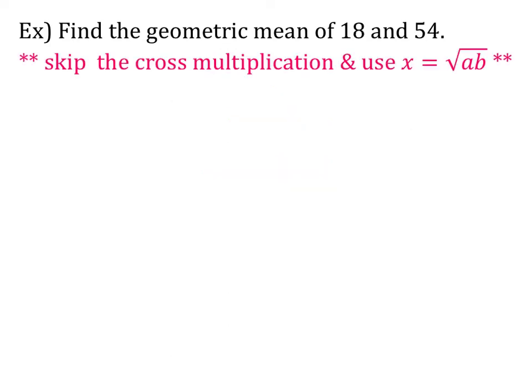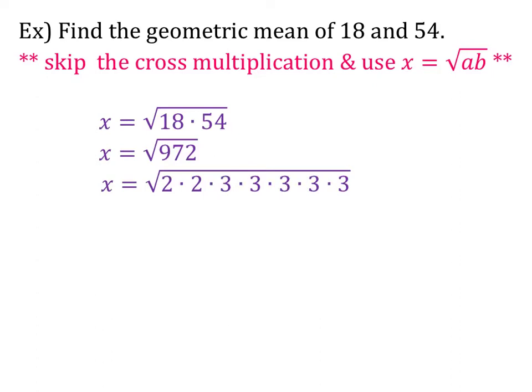Now try this example on your own. Find the geometric mean of 18 and 54. You can either set up the proportion and the two fractions, or skip the cross multiplication step and just use the formula x equals the square root of ab. If we plug in 18 for a and 54 for b, we get x equals the square root of 18 times 54, which is the square root of 972. Breaking that down into primes gives us 2 times 2 times 3 times 3 times 3 times 3 times 3. We have three pairs, so outside we have 2 times 3 times 3, which is 18, and one 3 remains inside. So x equals 18 square roots of 3.